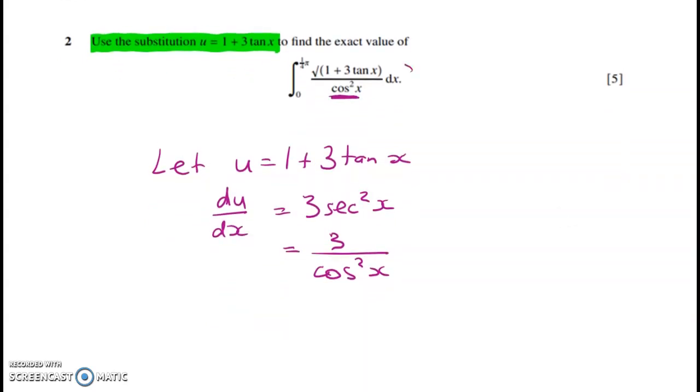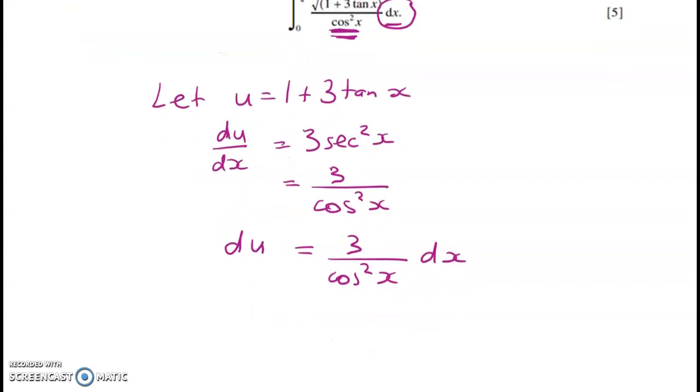What I'm trying to do now is to find a way to replace the dx by du stuff. So I get du is equal to 3 over cos squared x dx. We can see that this is working out quite nicely. We might just divide through by 3 and get 1 third of du is equal to 1 over cos squared x dx. So that's probably the cleanest way to go here.